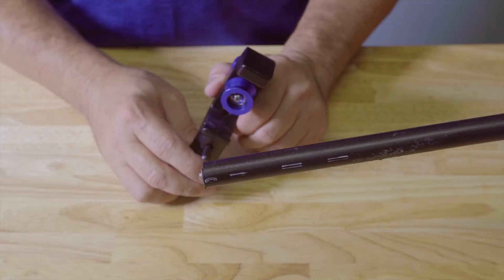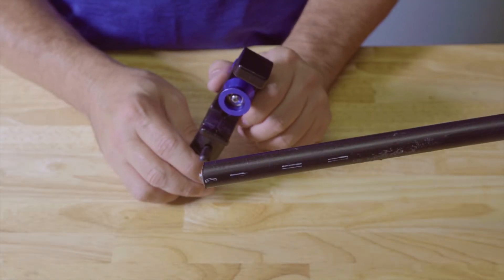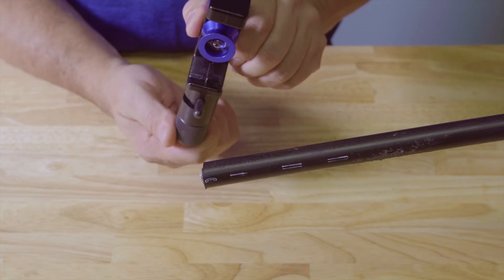To use the AST tool, first you need to set the blade depth. This is done with the black knurled knob fully tightened.